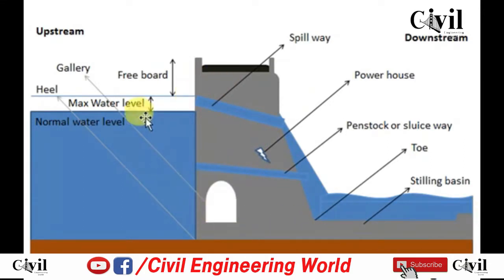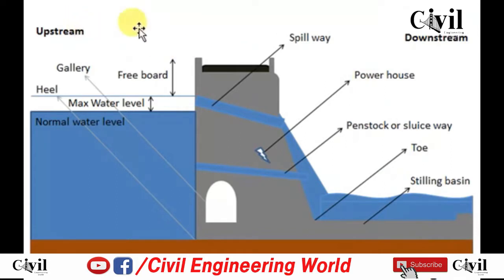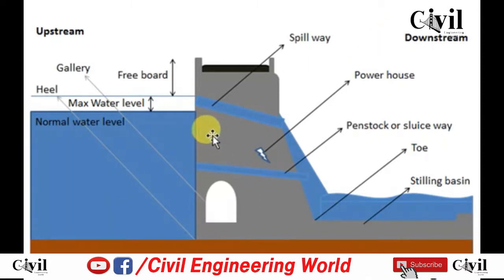Next is heel. Heel is the part of the wall which is on the upstream side and it ties with the upstream water. Next is maximum water level — maximum water level is the level of water which is stored during rainy season.